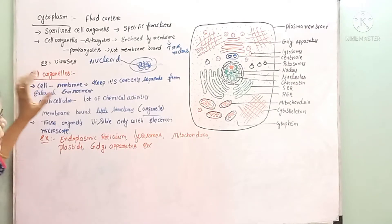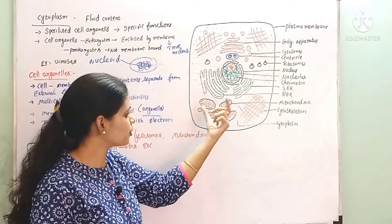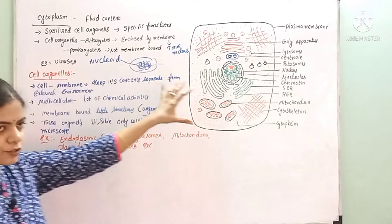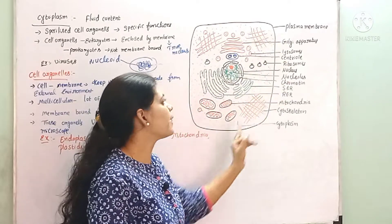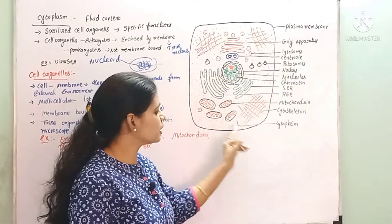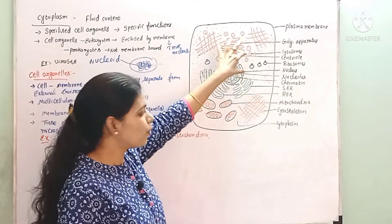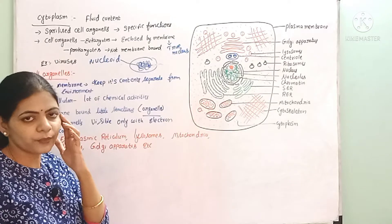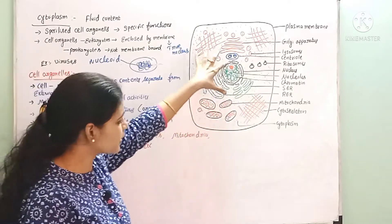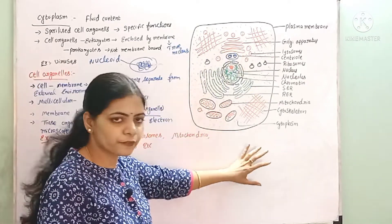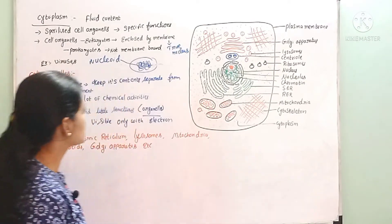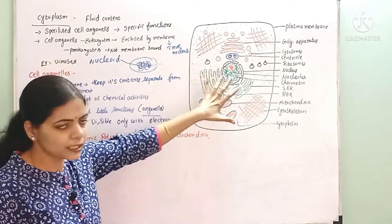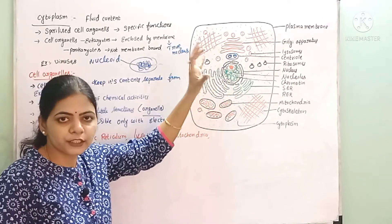Now let's study about cell organelles. We have cell organelles, but a cell without a membrane means the contents present inside the cell would not be separated from the external environment. The plasma membrane separates the contents present inside the cytoplasm from the external environment. This is the main function of the membrane. When we have cell organelles, the fluid and global network of organs will be properly maintained.